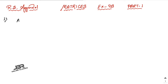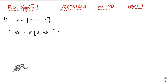Problem 1: if A equals [2, -3, 4] — it's a row matrix — find first 5A. You have to multiply 5 with each and every element. So 5 into 2 is 10, 5 into -3 is -15, 5 into 4 is 20. That is your answer.